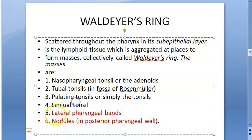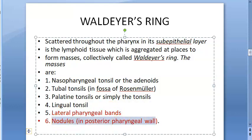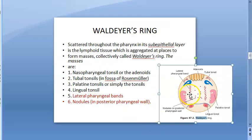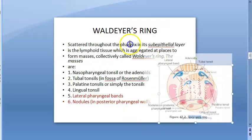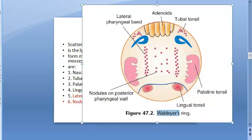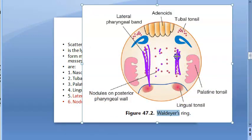They also mention the lateral pharyngeal bands and some nodules as additional components. Looking at an image: you can see the nodules in the middle and the lateral pharyngeal bands on the left and right sides.